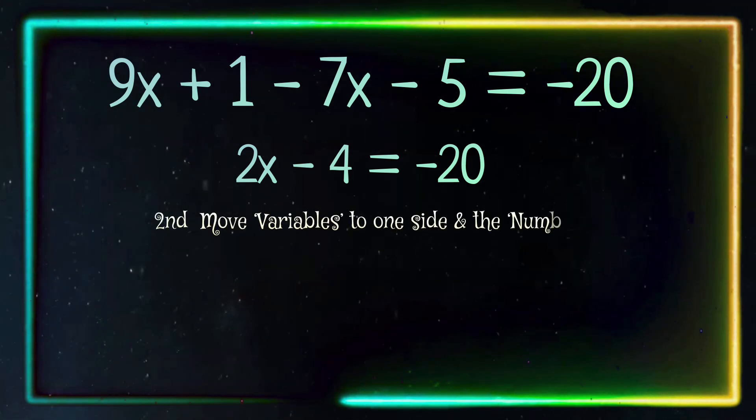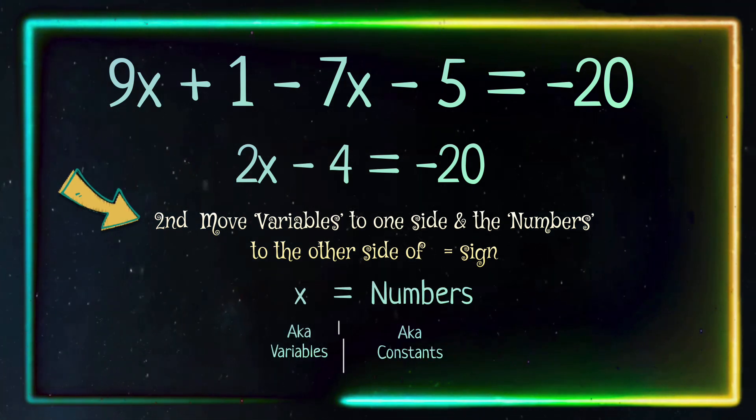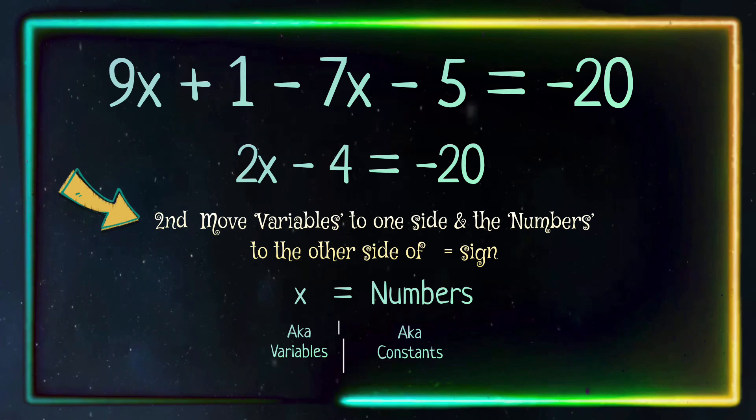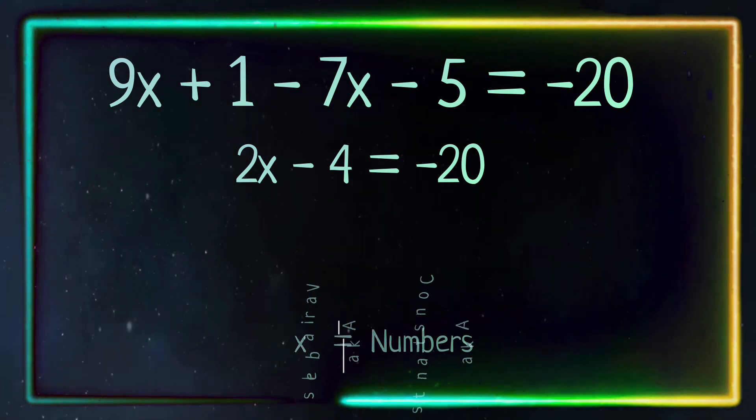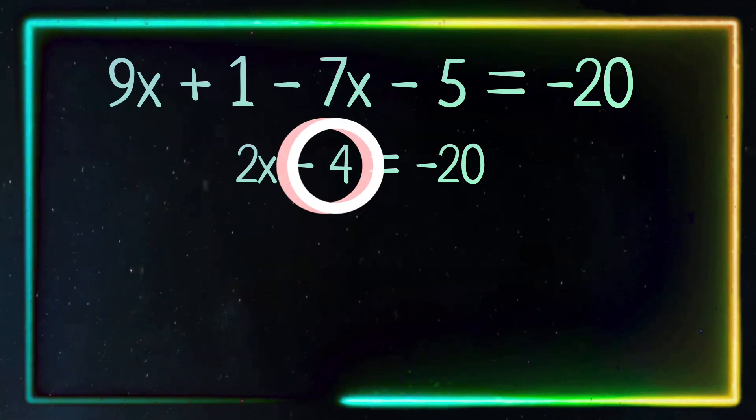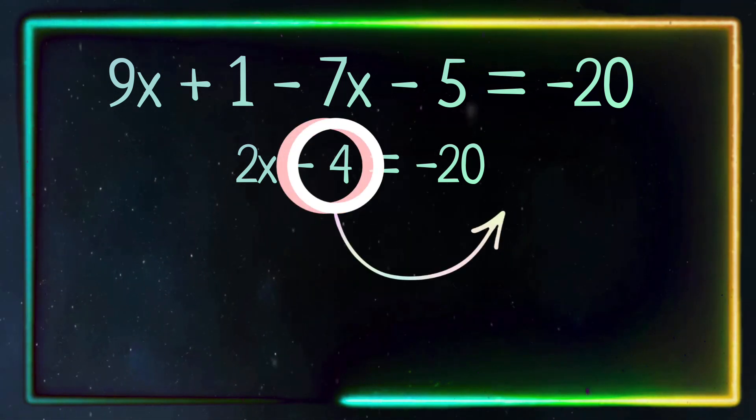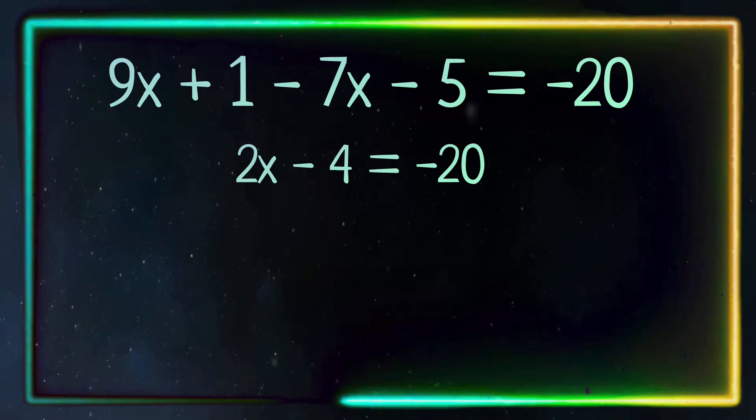Our second step is to move our x terms, also known as variables, to one side and our numbers, also known as constants, to the other side of the equal sign. So we're going to move the minus 4 to the other side of the equal sign, and in order to do that we have to cancel it out by using its inverse.